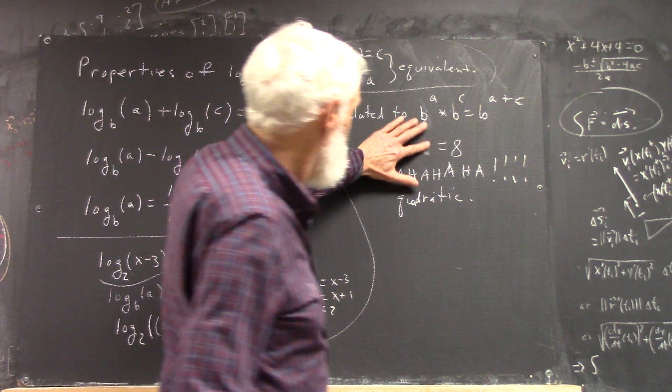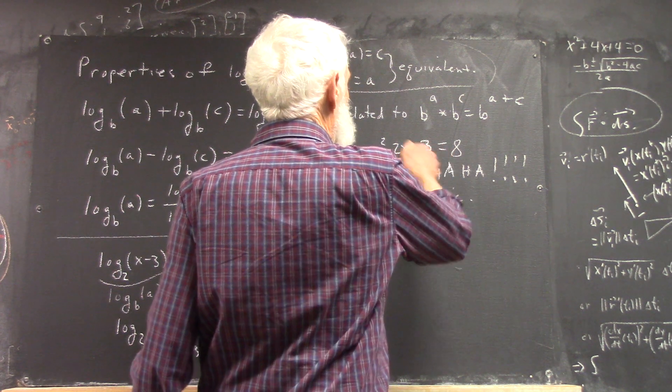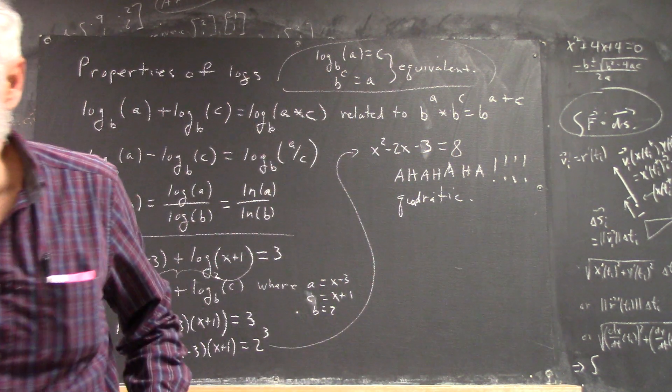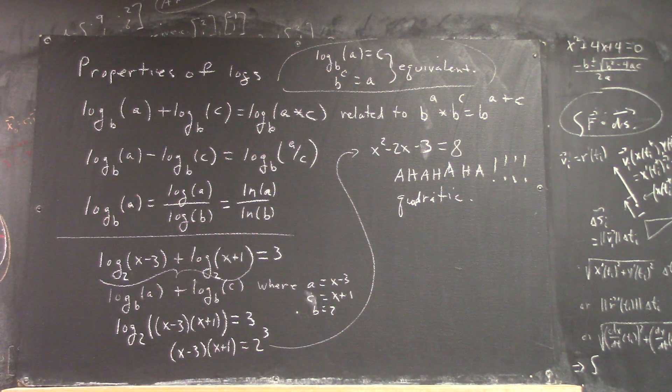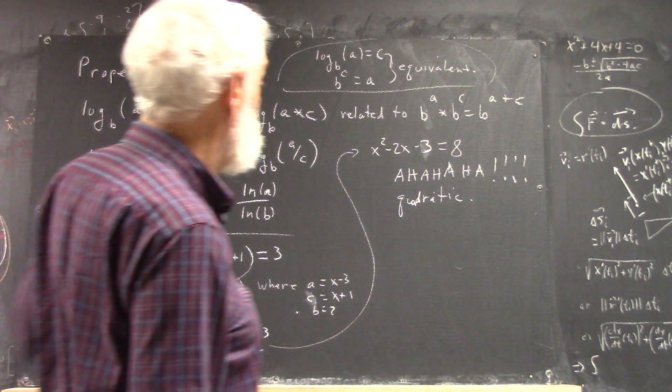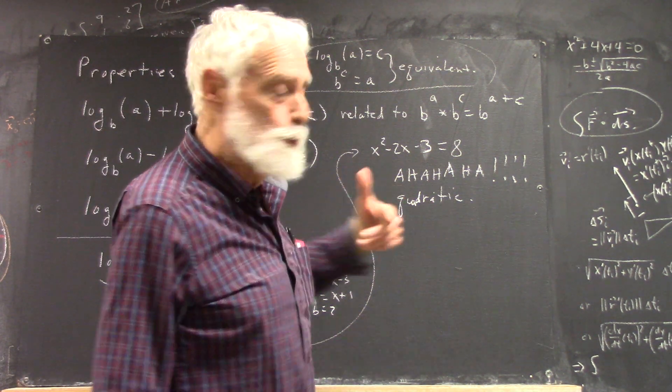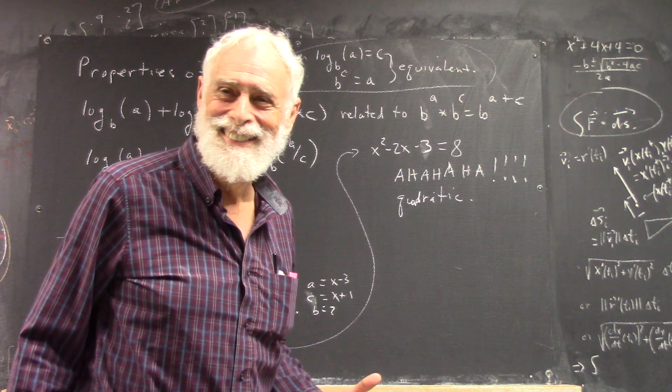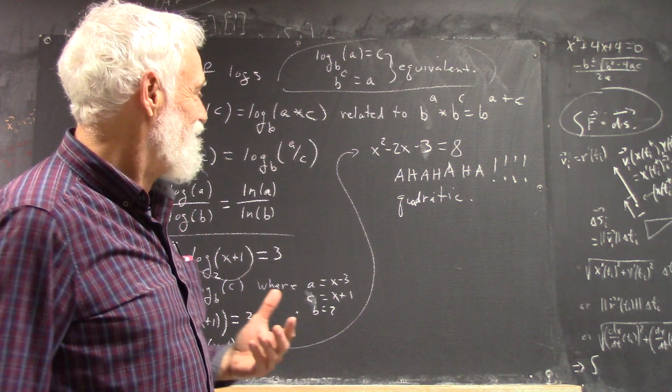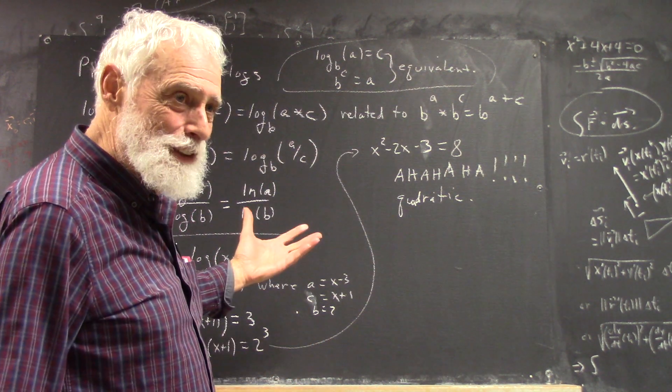That's 3, yeah. See? I've got somebody in here to do arithmetic. Remember, keep an eye on me. Okay. So, it's still a quadratic equation. So, what do we do?